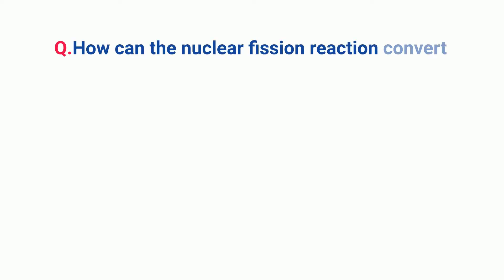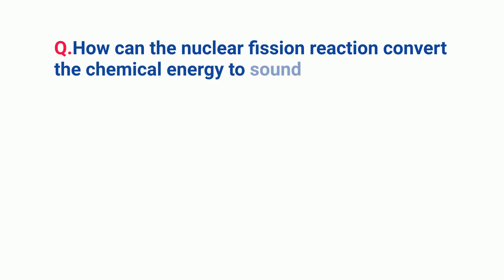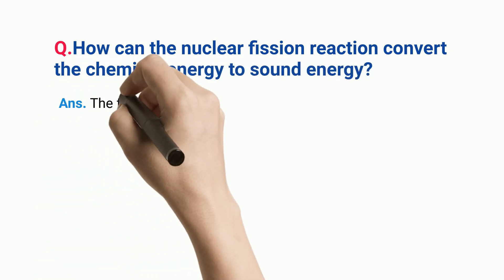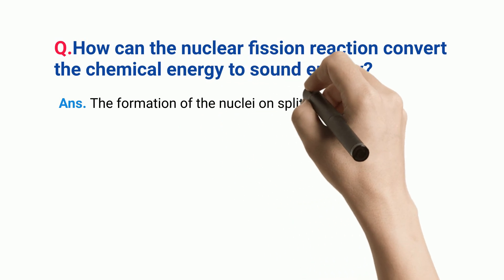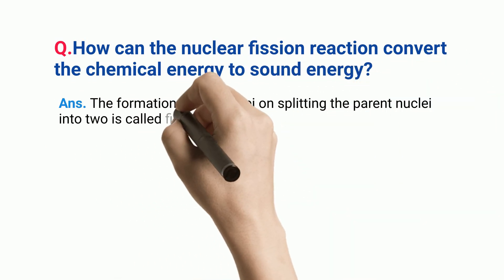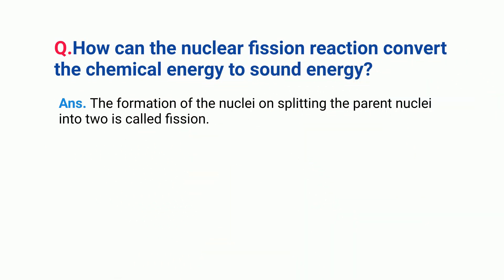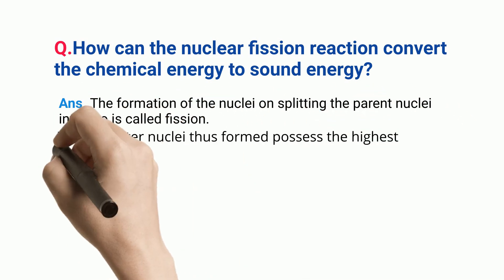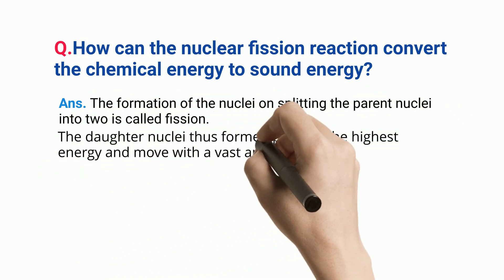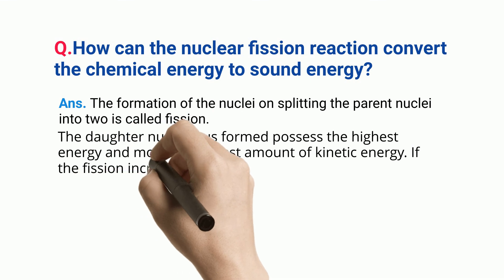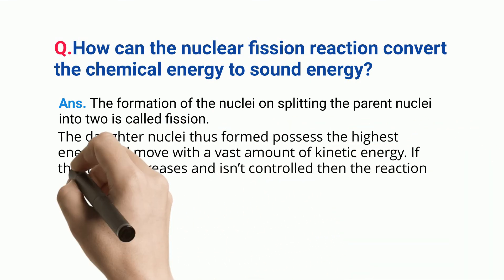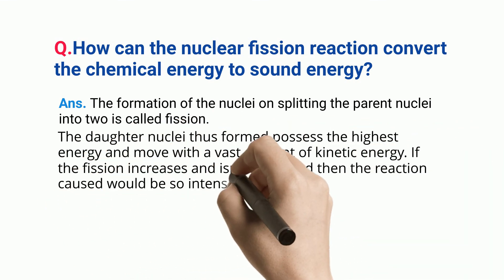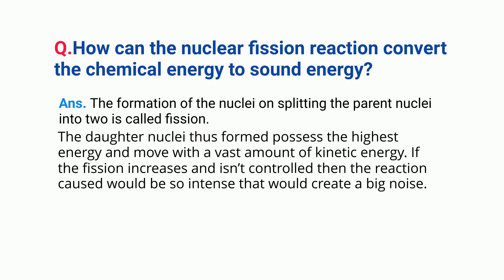Frequently asked questions: how can a nuclear fission reaction convert chemical energy to sound energy? The formation of daughter nuclei by splitting a parent nucleus into two is called fission. The daughter nuclei possess high energy and move with a vast amount of kinetic energy. If the fission is not controlled, the reaction would be so intense that it would create a big noise.